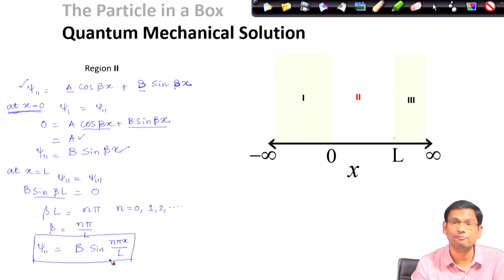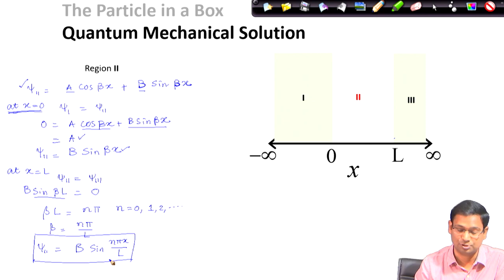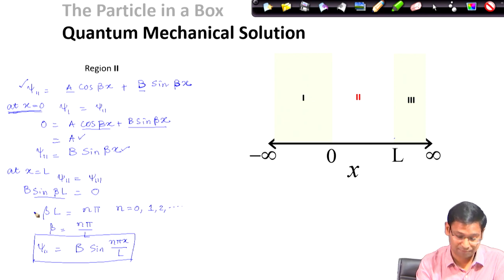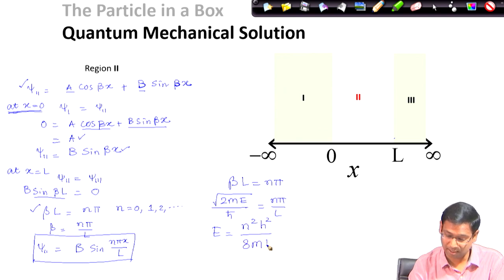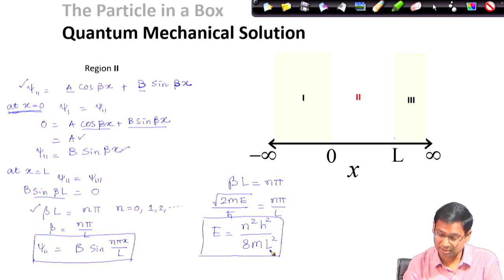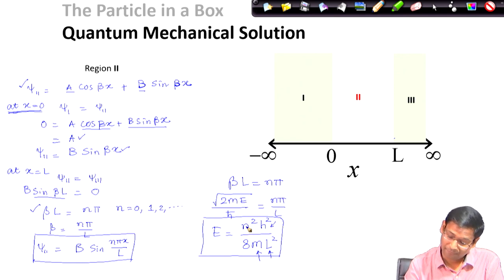The wave functions are quantized — not every sine function is a valid wave function; only specific discrete ones are eigenfunctions of this system. For the energy, starting from beta L = n pi and beta = sqrt(2mE) / h-bar, solving for E gives: E = n² h² / (8 m L²). The energy depends on the length of the box L, the mass of the particle m, Planck's constant h, and the integer n, which can be 0, 1, 2, 3 and so on.